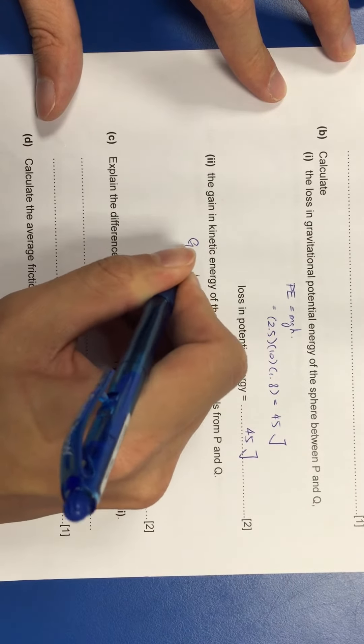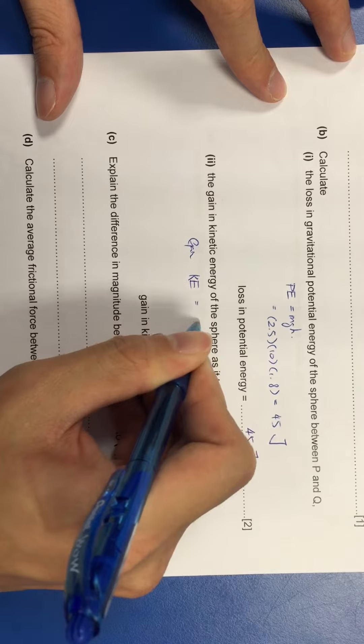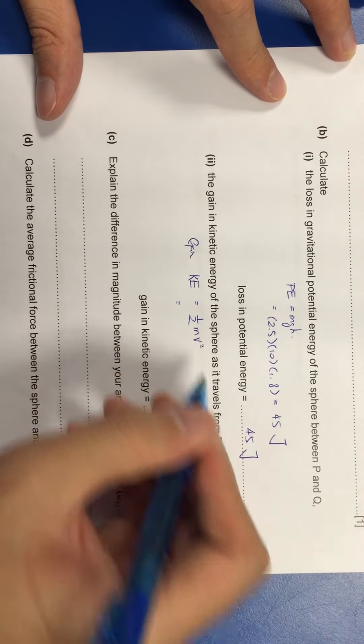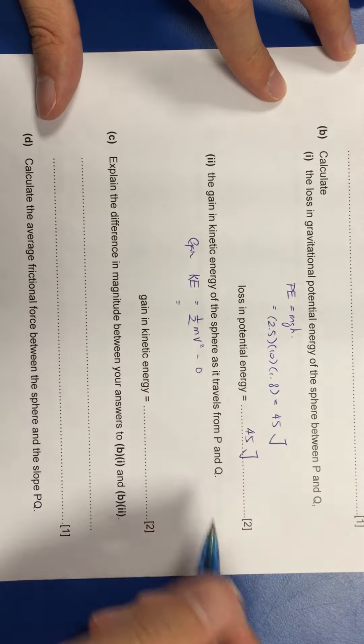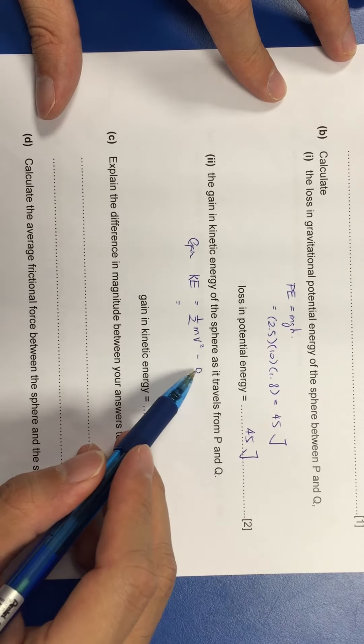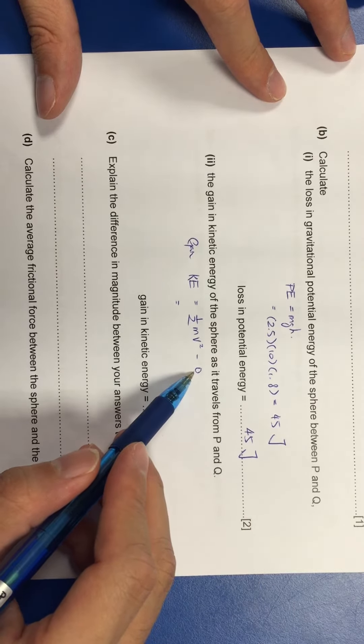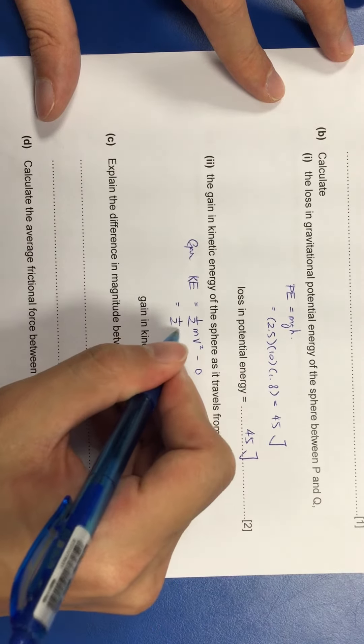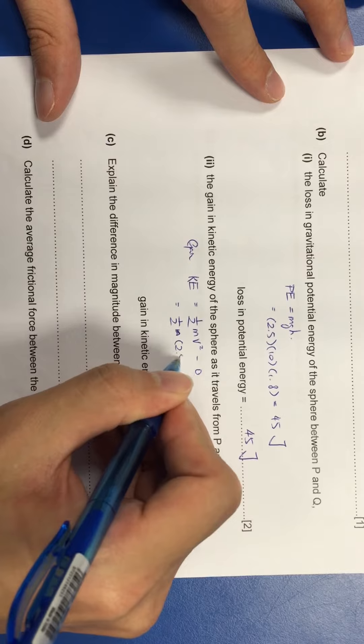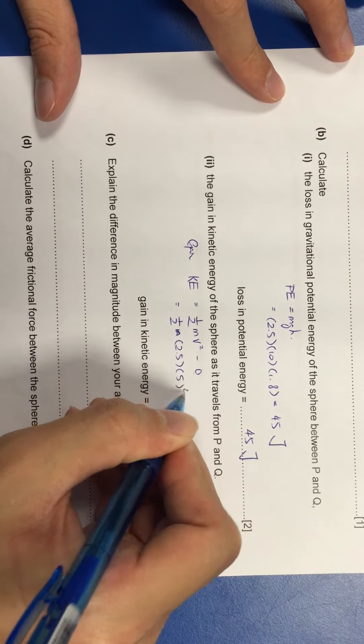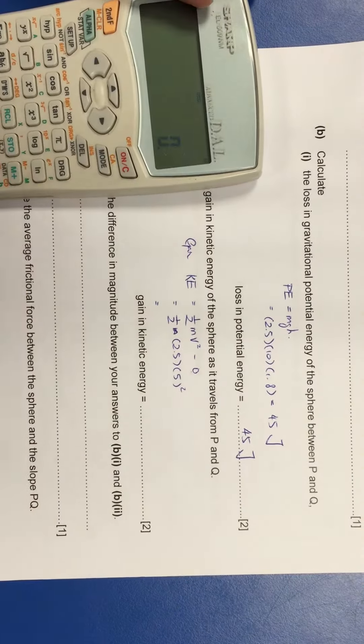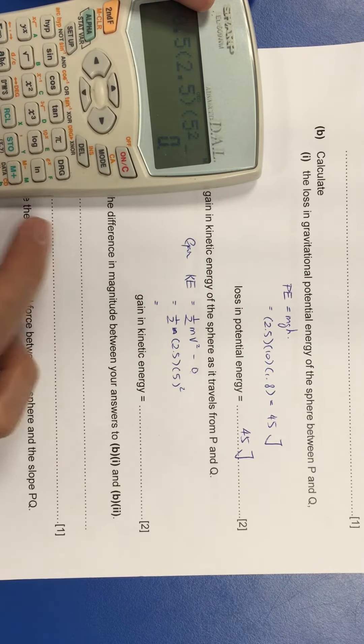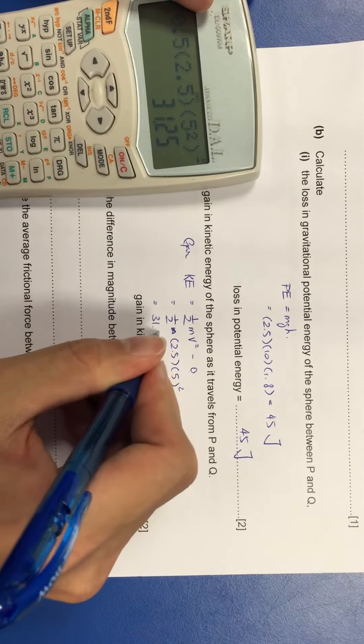So my gain in KE must be equal to half mv square, minus 0. Why I minus 0? This 0 represents the amount of KE at P. So once I do that, I just need to put in my numbers. I will get 31.25.